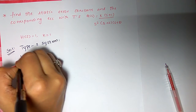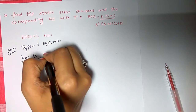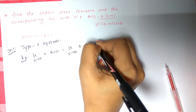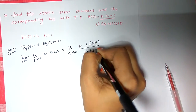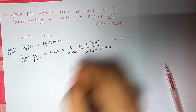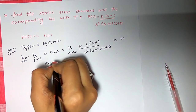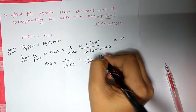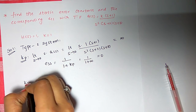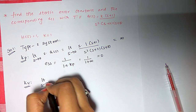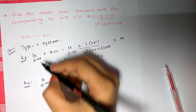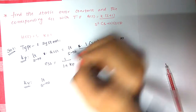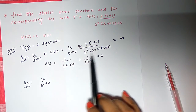First, find KP. KP equals the limit as s tends to 0 of G(s), which is limit s→0 of (s+1)/[s²(s+2)(s+3)] — that gives infinity. The corresponding steady state error is 1/(1+KP) = 1/(1+infinity) = 0. Note: KP is just the limit as s→0 of G(s) without the extra s factor.